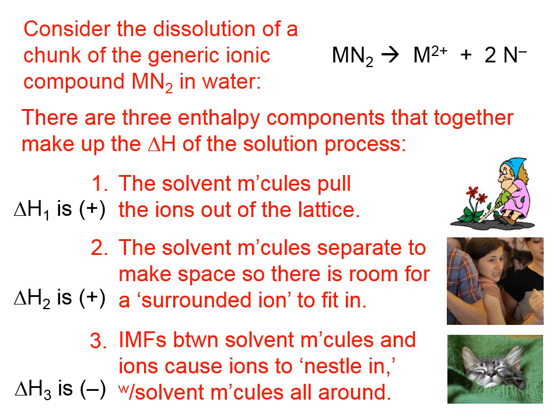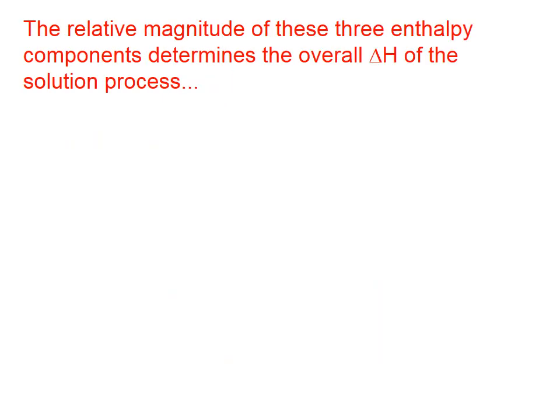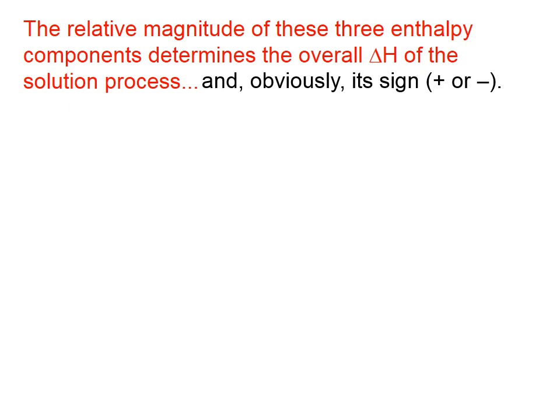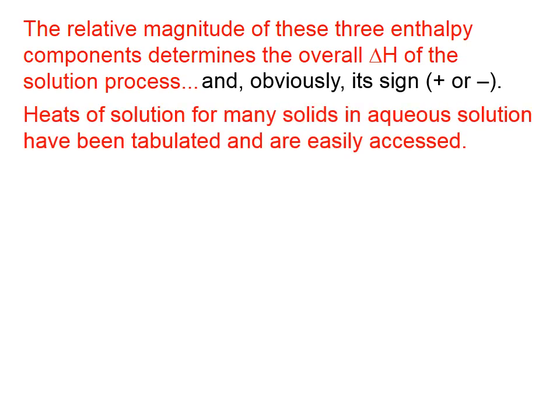For the third step, there's an energy release as these ions nestle in with solvent molecules all around. The relative magnitude of these three enthalpy components determines the overall change in enthalpy of the solution process and, obviously, its sign — positive or negative. Depending on the magnitudes of H1 and H2, both of which are positive, compared to H3, which is negative, that determines the overall enthalpy of the solution process.